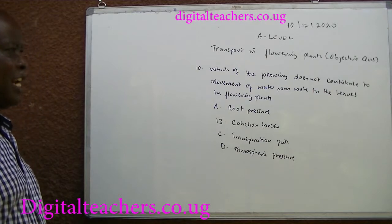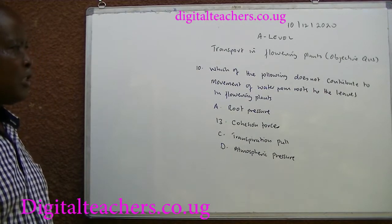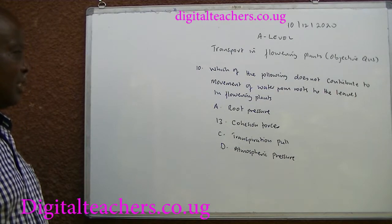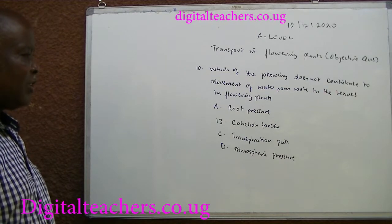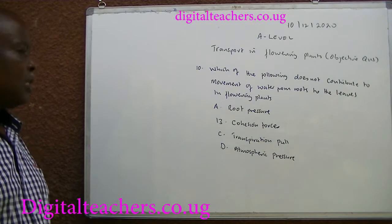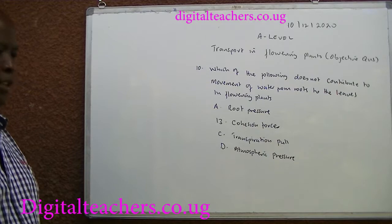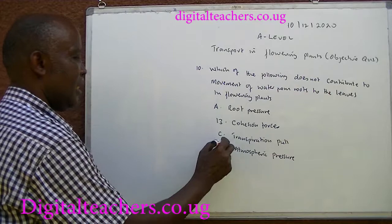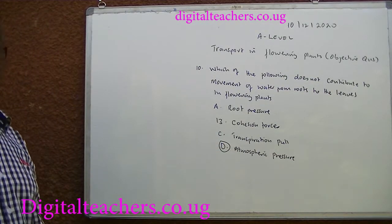Which of the following does not contribute to movement of water from roots to leaves in flowering plants? A. Root pressure. B. Cohesional forces. C. Transpiration pull. D. Atmospheric pressure. You can pause and answer. The answer is D. Atmospheric pressure.